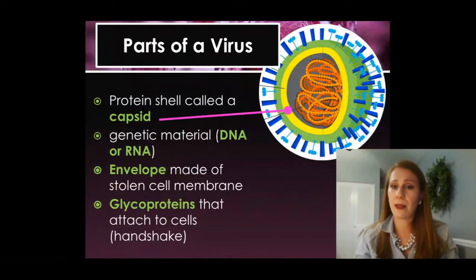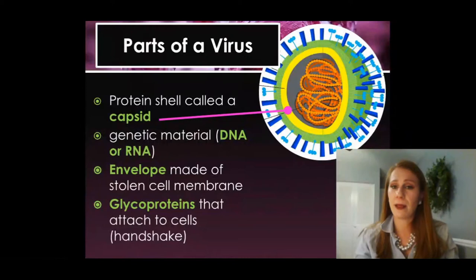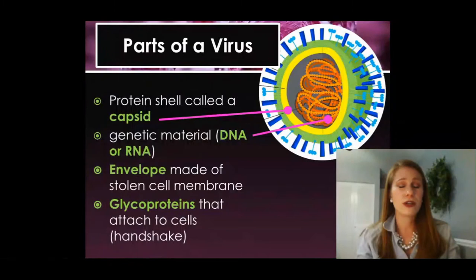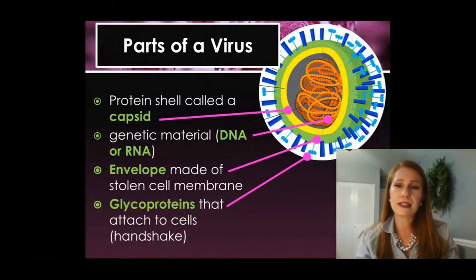Again, that capsid is the yellow part. The genetic material is either RNA, ribonucleic acid, or DNA, deoxyribonucleic acid, and is found in that center region of the virus. The envelope, made of the stolen cell membrane, is on the outside. And the glycoproteins, they're projections. They may look different depending on the type of virus, but they're always on the outside of the virus.